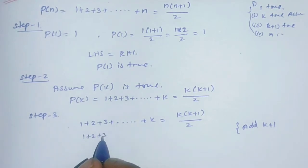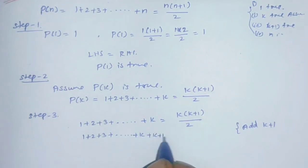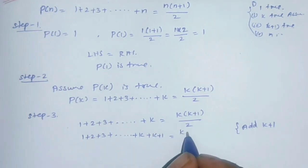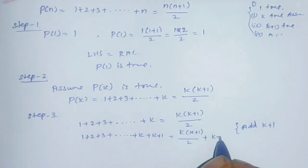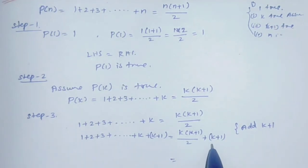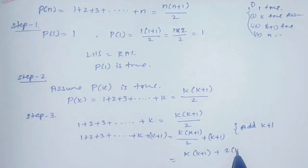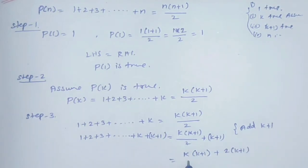LHS becomes 1+2+3+...+k+(k+1). RHS becomes k(k+1)/2 + (k+1). On the right side, (k+1) divided by 1, so we do cross multiplication: the whole expression becomes [k(k+1) + 2(k+1)] / 2.